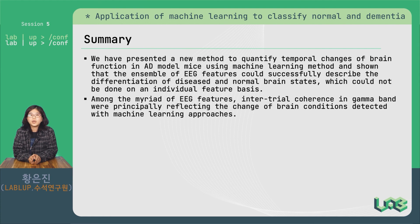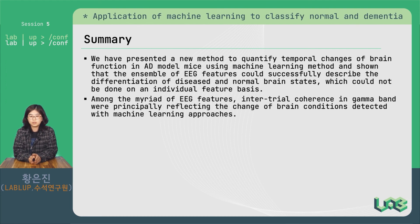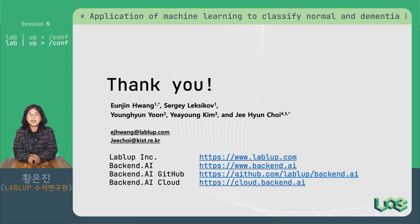To summarize, we have presented a new approach to quantify temporal changes of brain function in AD model mice using machine learning, and shown that the ensemble of EEG features could describe the difference of AD and normal brain states, which has not been done on an individual feature basis. Among the myriad of EEG features, inter-trial coherence in the gamma band was principally reflecting the change of brain conditions detected with machine learning approaches. Thank you for your attention.